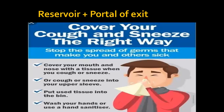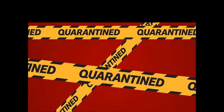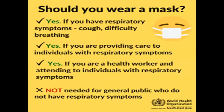The first thing we discussed was the reservoir and portal of exit, which is the infected host in which the virus is already present. To address this, everyone should know proper sneezing etiquette — sneeze into a disposable tissue paper and discard it immediately. If there is no tissue paper, sneeze into your sleeve, not your hands. Also, quarantine and self-isolation: if an individual is infected, has symptoms, or has recently travelled, they should self-isolate so they don't spread the disease.